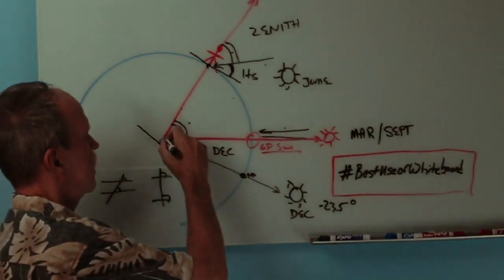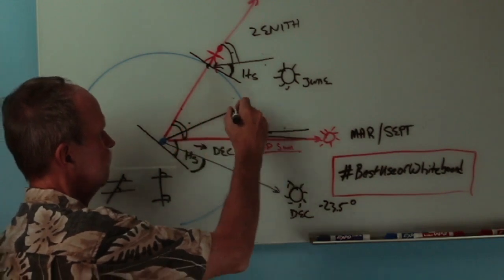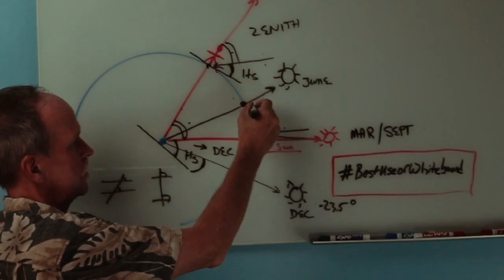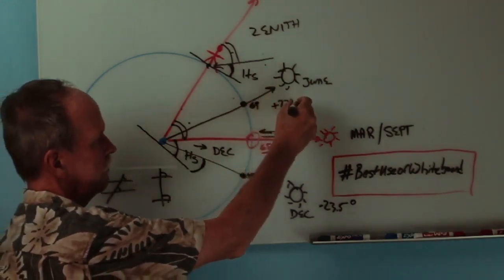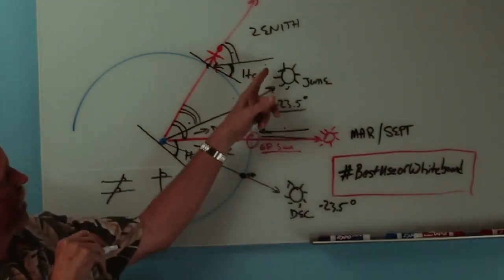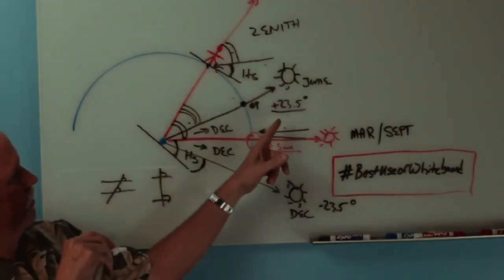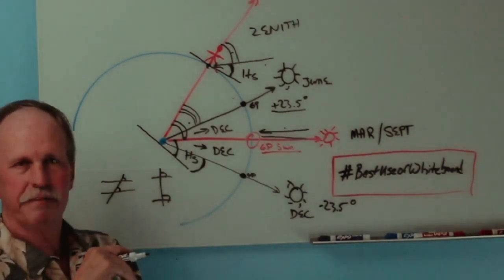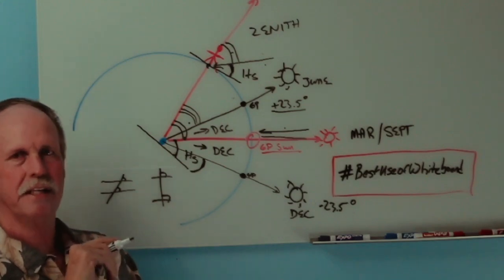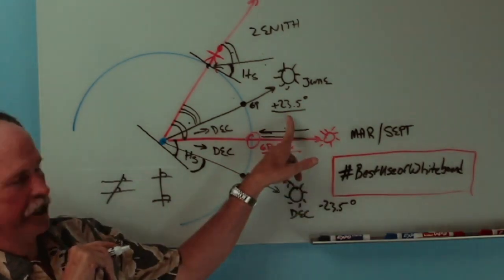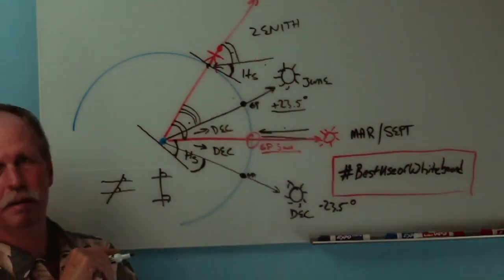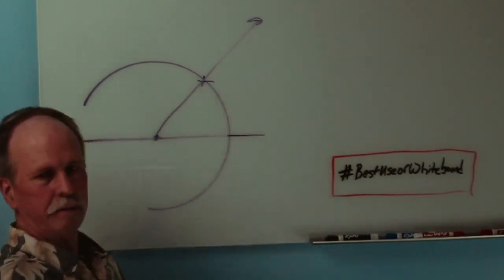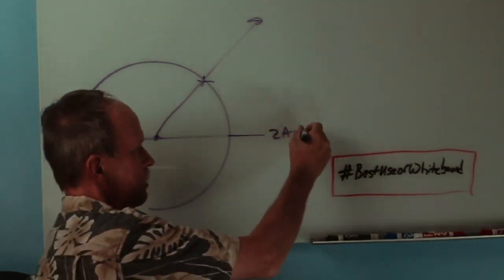Likewise, if the Sun is up here in June, and that's the new GP of the Sun, which is plus 23.5 degrees, what would we measure here? Well, our zenith angle would be 40 degrees minus 23 and a half. So that would be 16 and a half degrees. We'd have to add to that 16 and a half degrees the declination 23 and a half degrees, and we would come up with 40. If the Sun is at the equator, zenith angle equals latitude.